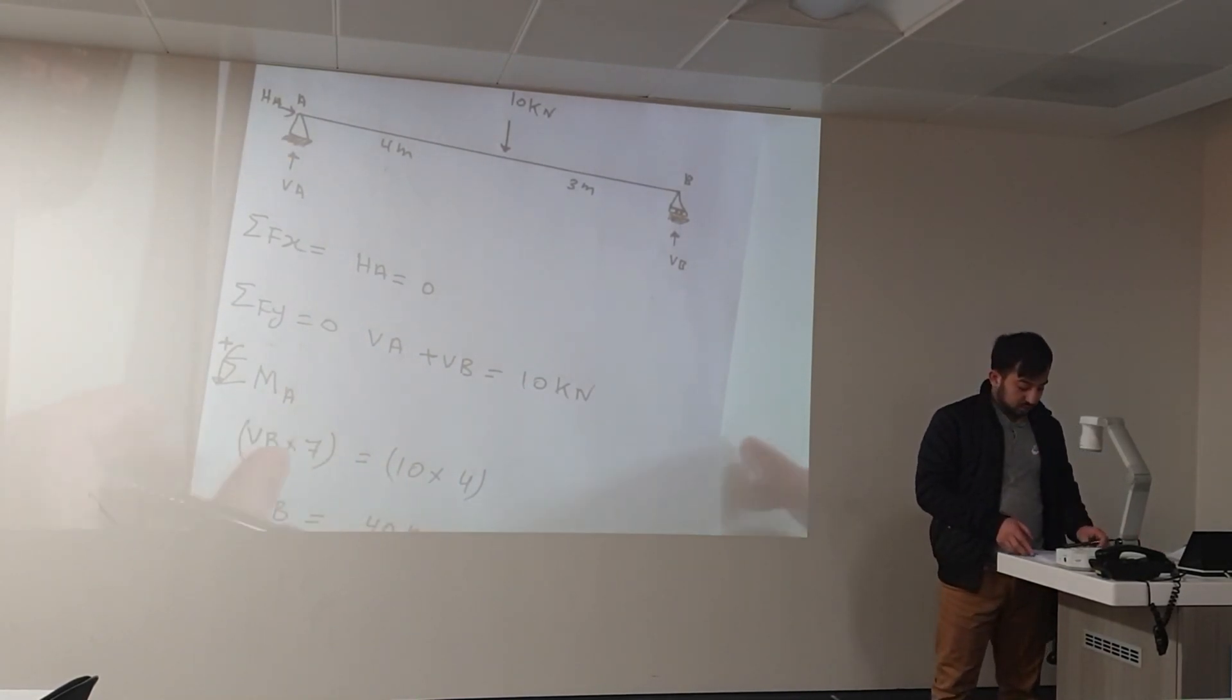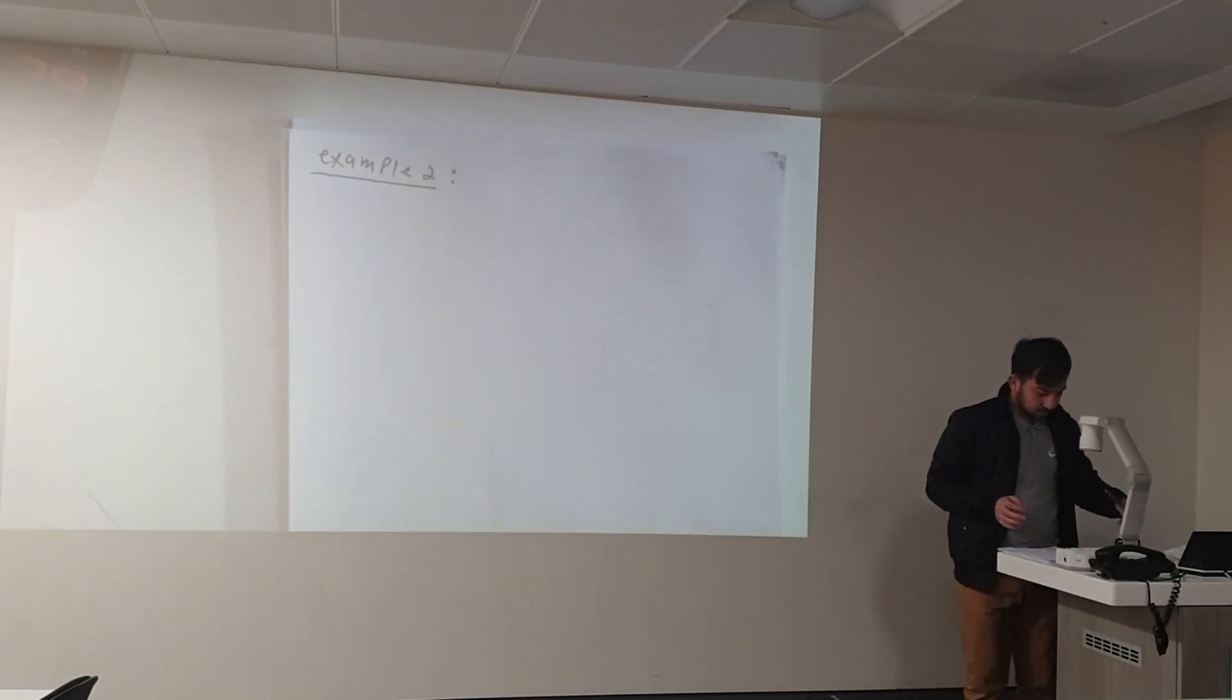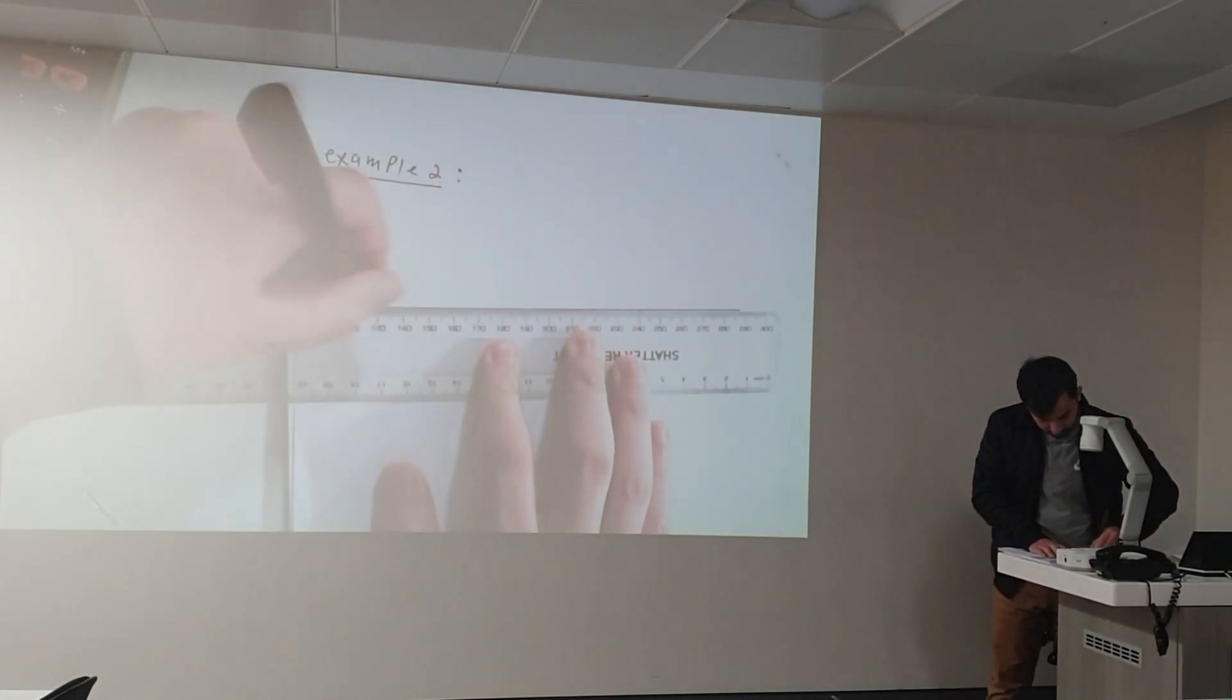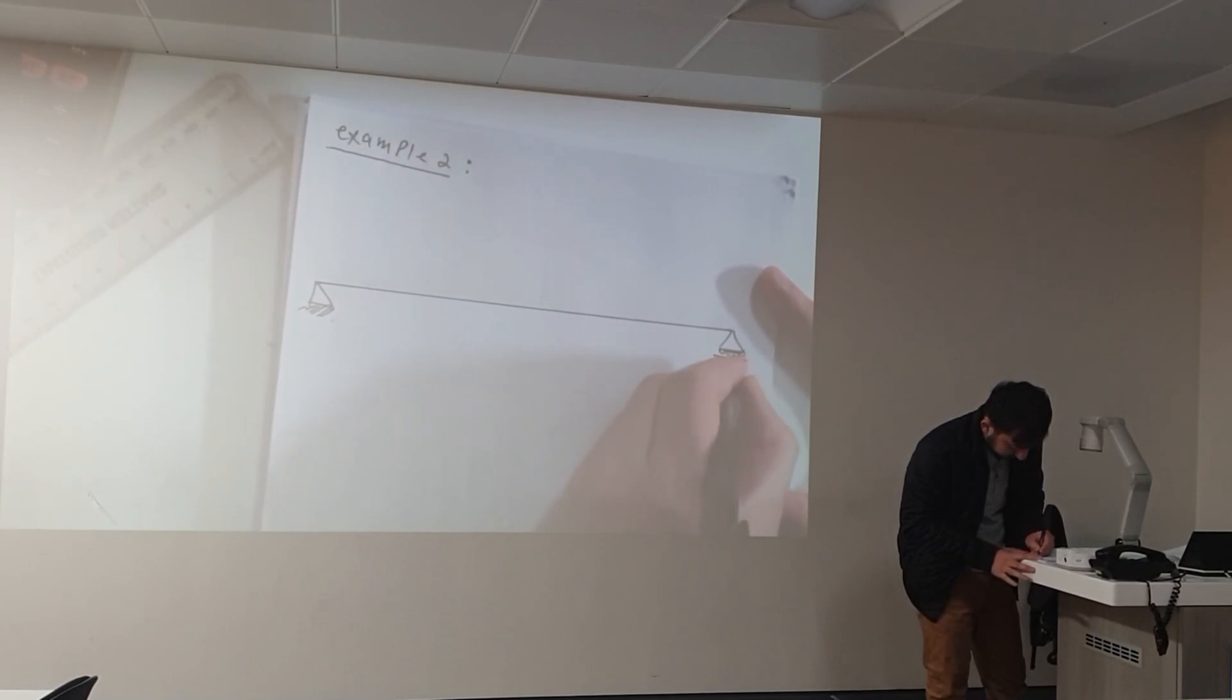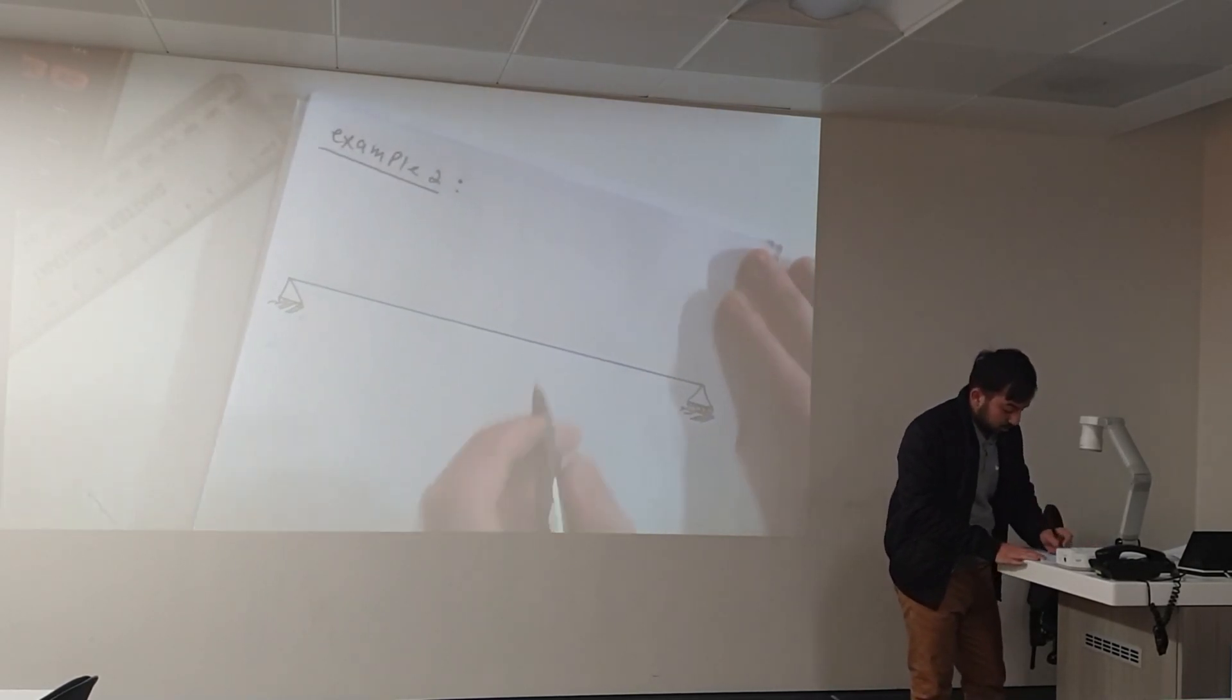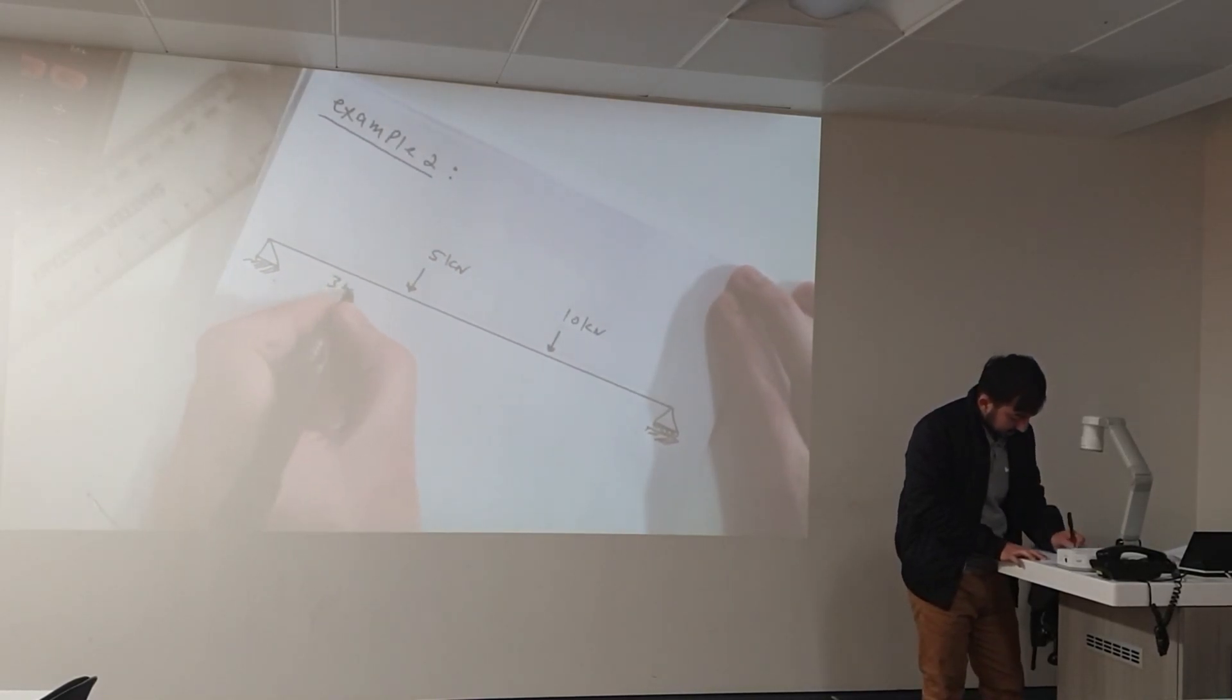So we will do one more example, similar, but this time we will take a moment at point B. This is example 2. This is point A with pin support, point B with roller support. And this time we are assuming two forces acting downward: 10 kilonewtons and 5 kilonewtons. The distances are 3 meters, 4 meters, and 3 meters.